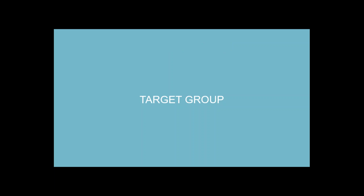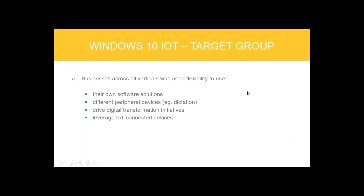Let's have a look at the target groups. The Windows 10 Internet of Things targets businesses across all verticals who need flexibility to use their own software solutions, different peripheral devices such as dictation or scan devices, and who want to drive digital transformation and leverage IoT-connected devices. If there's any compatibility issue with our Agile OS Linux-based devices, a Windows 10 device may be the solution.